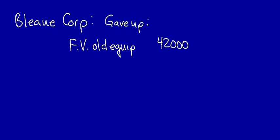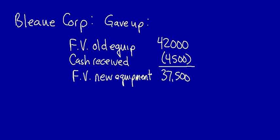Adding the fair value of the new equipment, next we take the cash received and we deduct it. Why do we deduct the cash received? We have to deduct the cash since the company no longer gave up $42,000 because they were paid for a portion of what they gave up. So they gave up less than $42,000 — they actually gave up $37,500. And that is the fair value of the new equipment.